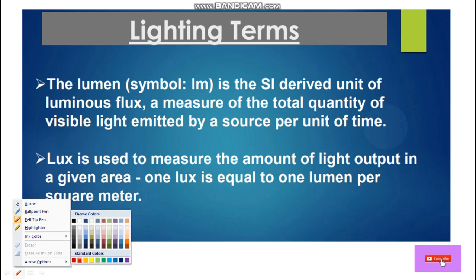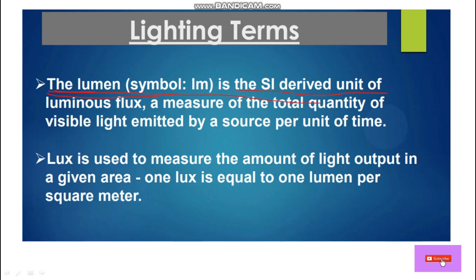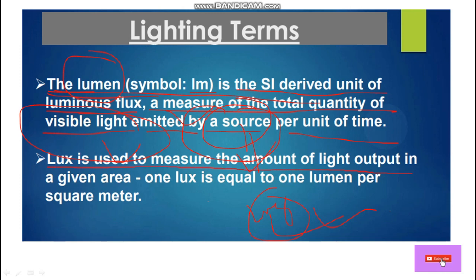The lumen is the SI derived unit of luminous flux — a measure of the total quantity of visible light emitted by the source per unit time. The source means the light fixture, the bulb. Its unit is lm. Similarly, lux is used to measure the amount of light output in a given area. One lux equals one lumen per square meter.